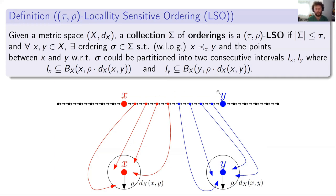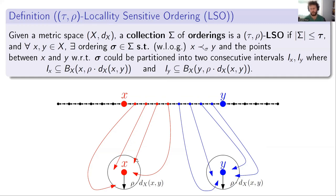So all the points between X and Y are very close to one of them. The closeness is governed by parameter rho: all the points in the prefix are within distance approximately rho times the distance between X and Y. So these partitions place all points into two very small balls.